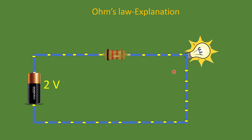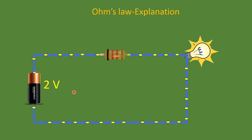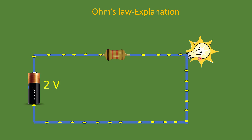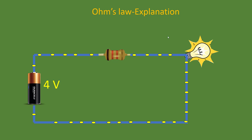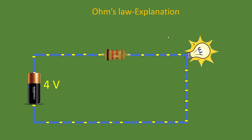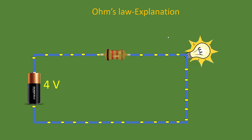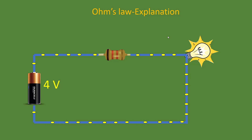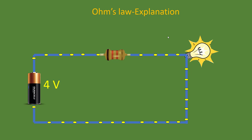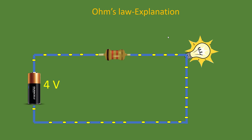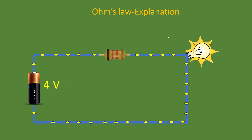Consider a 2-volt battery connected to a lamp with 1-ohm resistance — electrons are moving and the light is on. If we increase the voltage from 2 volts to 4 volts, there will be more pushing force, so more electrons will flow in the specified direction, resulting in more current. So if we increase the voltage, the pushing force increases, and because of that there will be more current in the conductor.